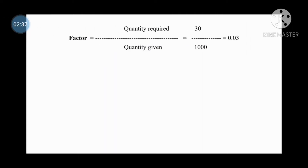Factor: quantity required is 30ml and quantity given is 1000ml. So the factor is 30 divided by 1000, which gives us 0.03. This is our calculation factor.